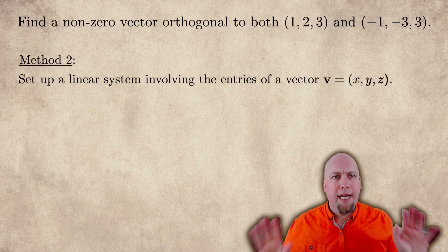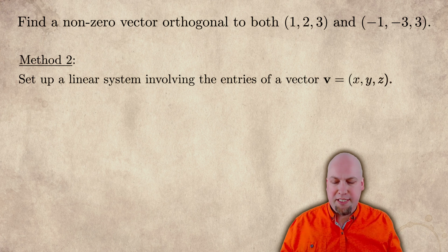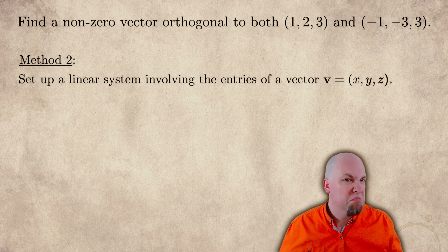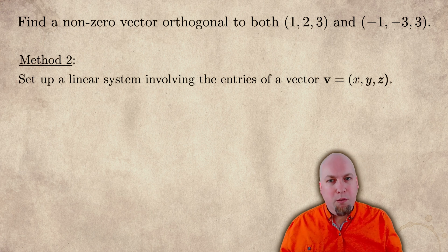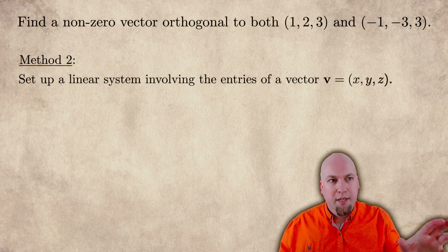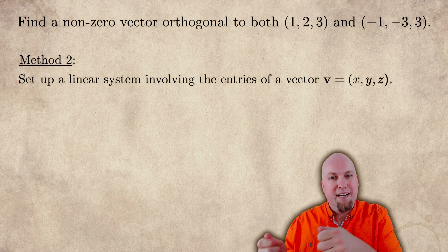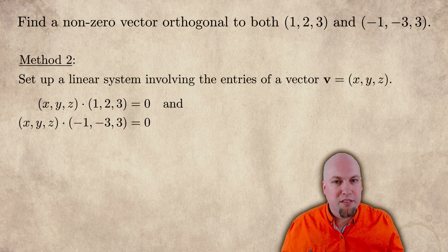The cross product is one of the very few things in linear algebra that's actually dimension dependent, so I don't like it. Let's talk about the dimension independent way of solving this problem, and that is via linear systems. To solve this problem via linear systems, you say: I want to find this vector v, I don't know what its entries are, so just give names to its entries — call them x, y, and z. And now I want it to be orthogonal to these two other vectors.